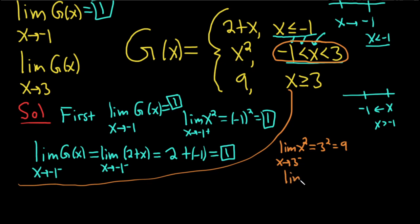Now let's approach from the right. So approaching 3 from the right, we're bigger than 3. So we use this condition here. And so we replace g of x with 9. So this is equal to 9.